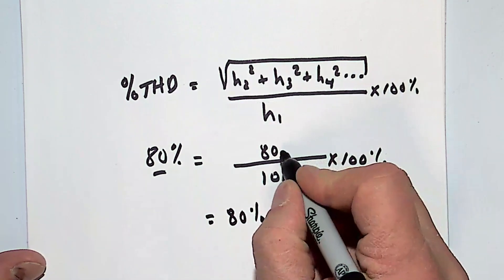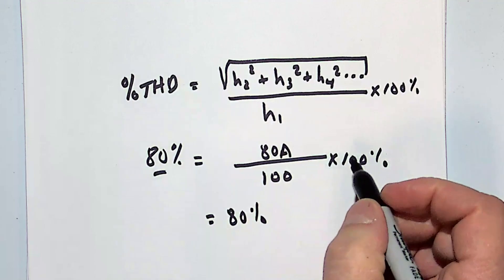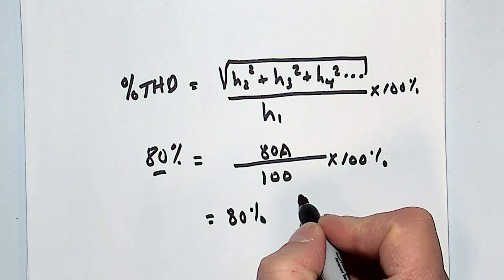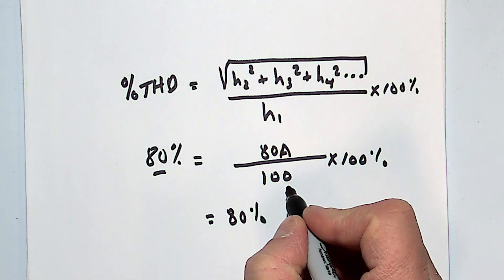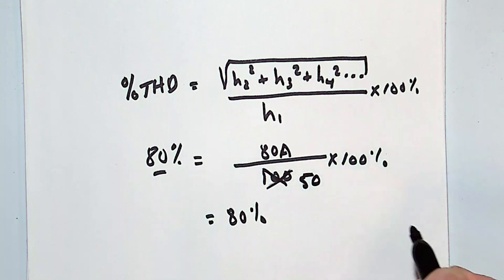What if it's overnight, and my load becomes very light, my 60 hertz load becomes light, and this number is now 50 amps?